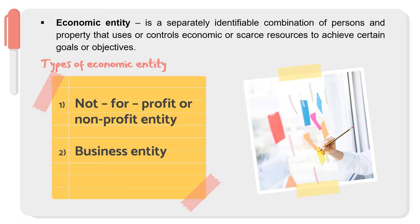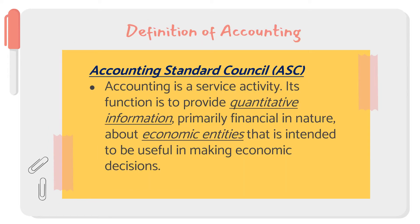On the other hand, a business entity is an economic entity that produces and distributes goods or services primarily for profit. The main difference between these two is that one is not directed towards making profit, while the business entity is primarily for profit. The main purpose of providing this information is to be useful in making economic decisions.